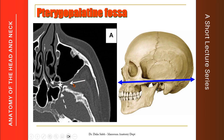Deep to the infratemporal fossa, there is another cavity which lies deep to it — this is the pterygopalatine fossa. And there is a door leading to the pterygopalatine fossa from the infratemporal fossa. This door, or this fissure, is called the pterygomaxillary fissure. And even here we can see that deep to the pterygopalatine fossa there is the nasal cavity, and the opening between them is called the sphenopalatine opening.